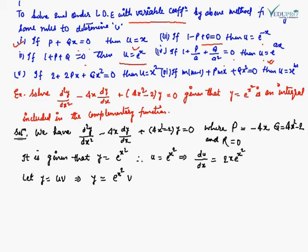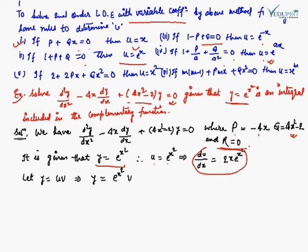Example: Solve d²y/dx² - 4x·dy/dx + (4x² - 2)·y = 0. Here, P = -4x (coefficient of dy/dx), Q = 4x² - 2 (coefficient of y), and R = 0. It is also given that y = e^(x²), so u = e^(x²). Differentiating, du/dx = 2x·e^(x²).